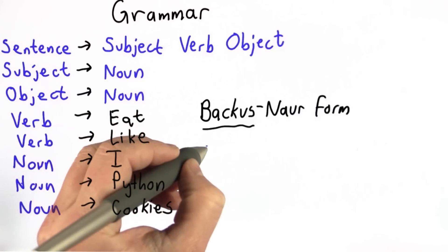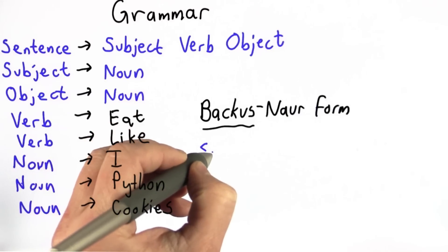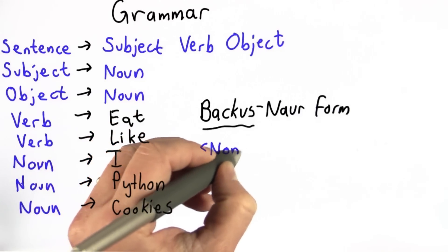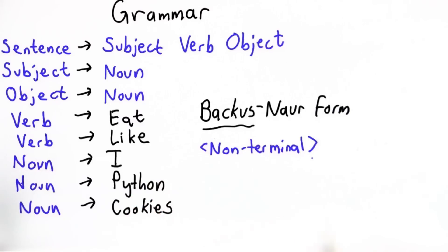So each rule has the form like this, where on the left side there's a non-terminal. Non-terminal means something that we're not finished with. All the words written in blue in the grammar are non-terminals. Sometimes they're written with brackets around them.